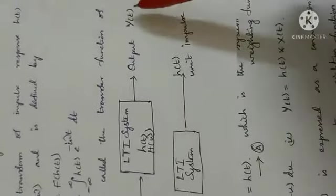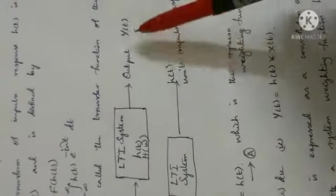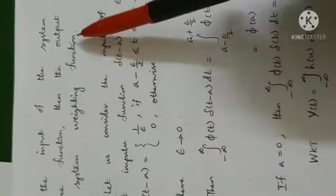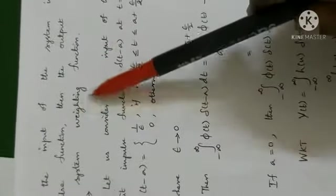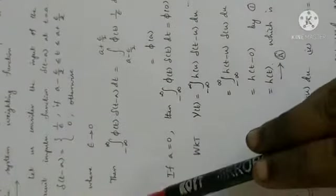And I already told you a diagram. When you choose delta of t as your input, h of t will be the output. So y of t equals h of t. So here the question is: input is unit impulse function, you have to show output y of t is system weighting function, that is system response function, h of t. Y of t equals h of t is to be proved.